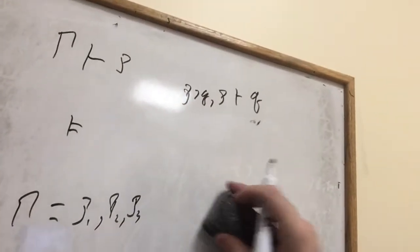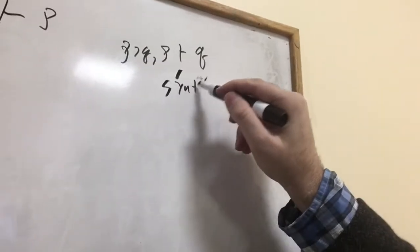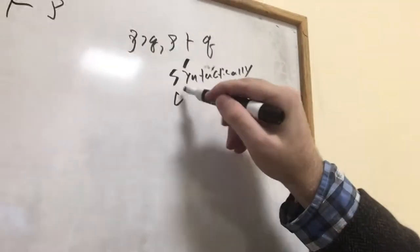The basic idea is that if you have P⊃Q and P, that syntactically entails Q. What the turnstile means — syntactically entails — is that there is a proof starting from P⊃Q and P and getting to Q. We know that proof exists because that's just modus ponens, one of our basic rules.